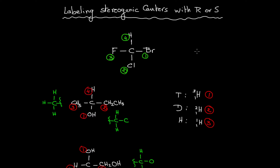Now if we go back to the previous examples, how can we assign R and S? To assign R and S we need to draw the molecule in a 3D structure, using wedge and dashed bonds. For the first example, I will put hydrogen to the back, bring the bromine to the front, and the two bonds in the plane for fluorine and chlorine. Now I'll reassign priorities: one for bromine, two for chlorine, three for fluorine, and four for hydrogen.